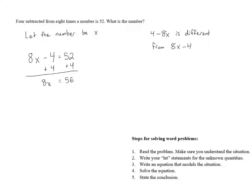Now, to get x alone, we have to divide by 8. So we have to divide both sides by 8. And when we do that, we're left with just x on the left-hand side. And 56 divided by 8 is 7. So, we've got x equals 7.